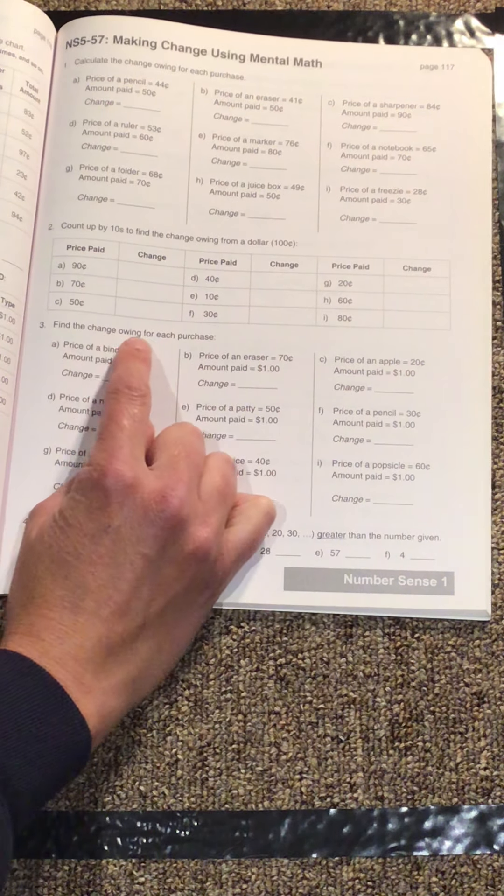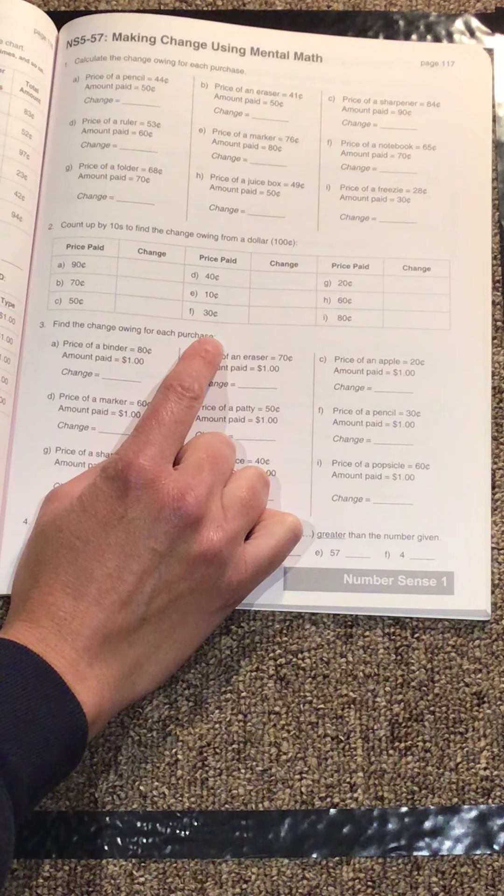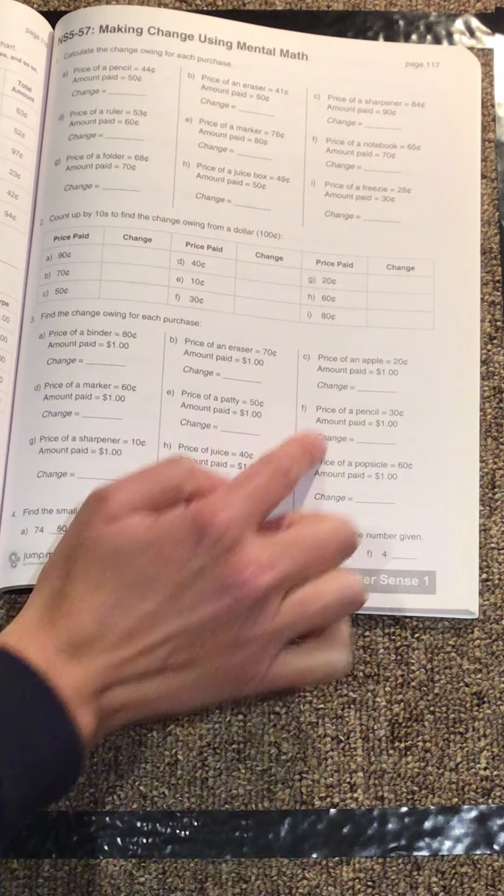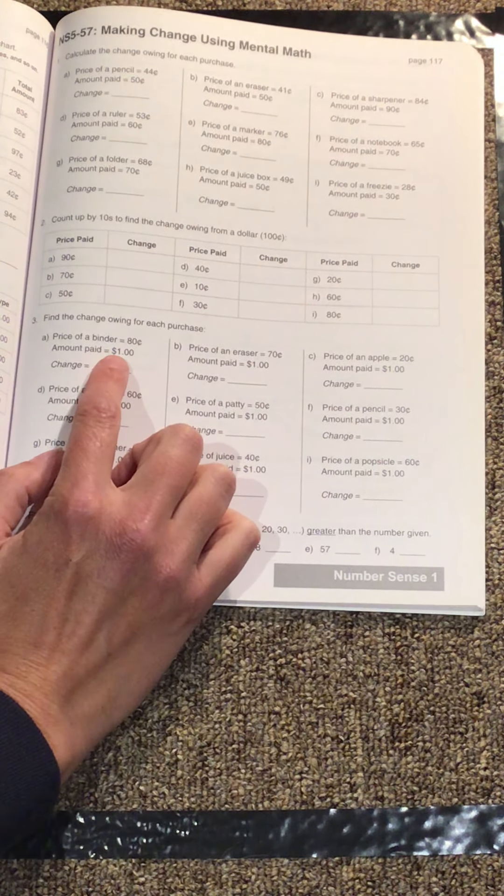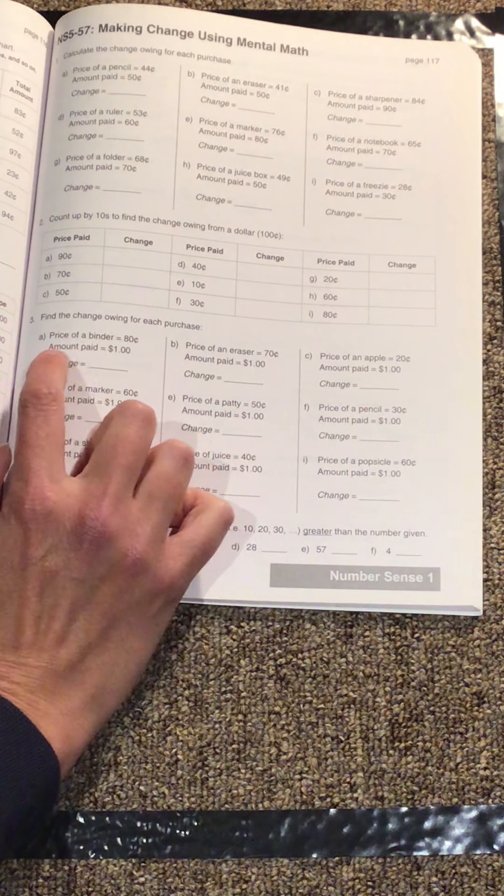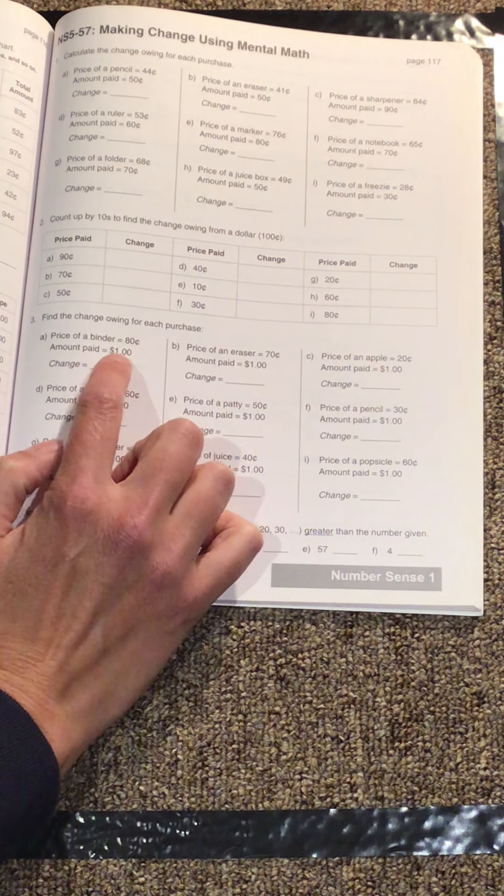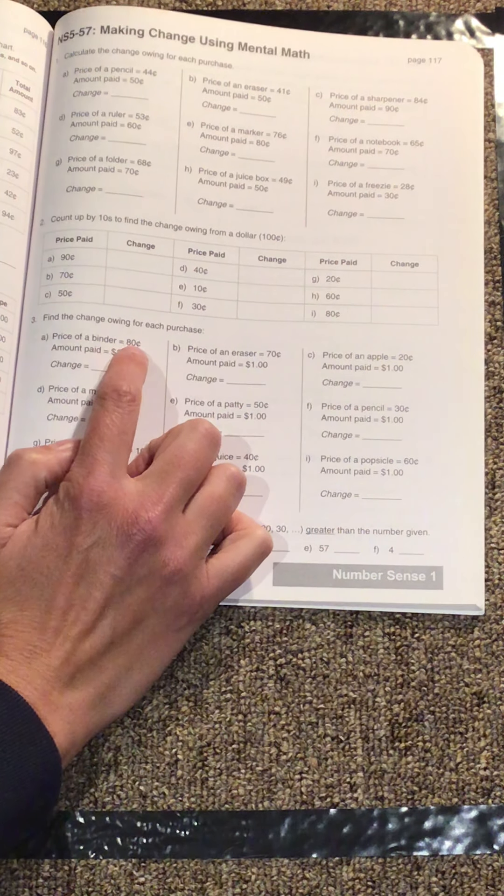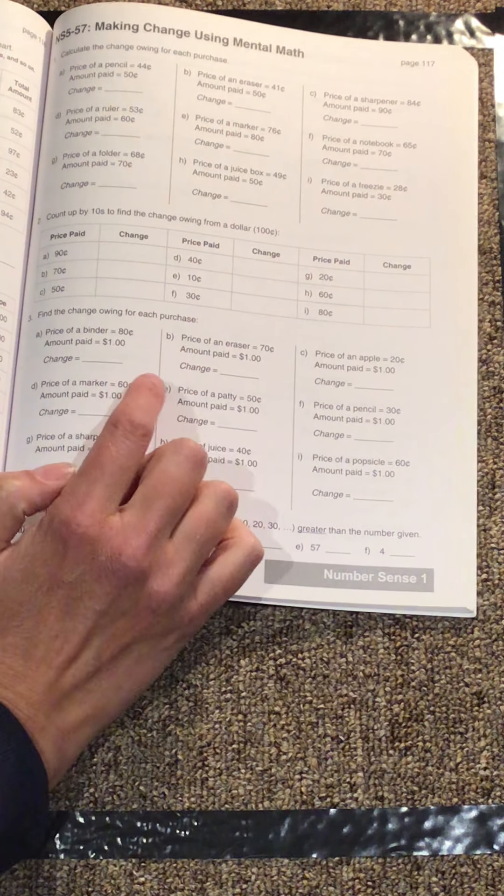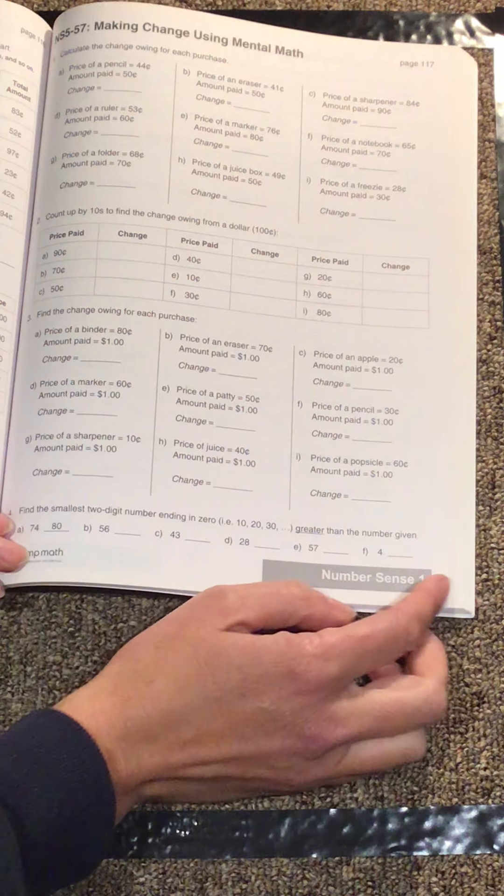Question three, find the change owing for each purchase. So again, all of these ones, they've paid a dollar, so 100 cents. The amount paid is always going to be $1 or 100 cents, and then they give you the price here, so you just have to figure out the difference. Remember, we're counting up by tens.